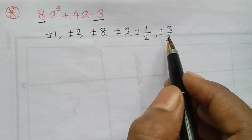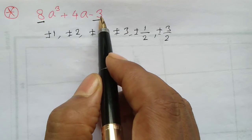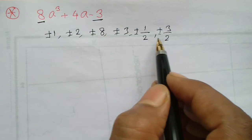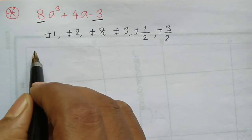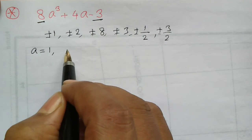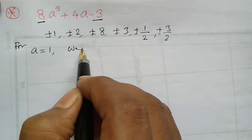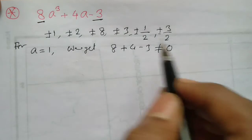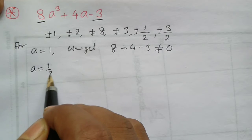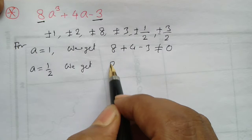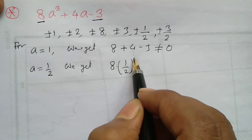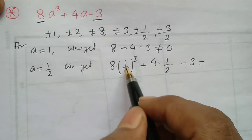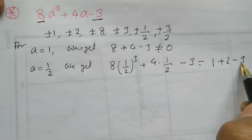The polynomial is 8a cube plus 4a minus 3. We can choose any one of the probable zeros. First we choose a equals to 1, and we get 8 plus 4 minus 3, which is not equal to 0. If we choose a equals to half, we get 8 into (1/2) cubed plus 4 into (1/2) minus 3, which equals 8 by 8 plus 2 minus 3, and this is equal to 0.